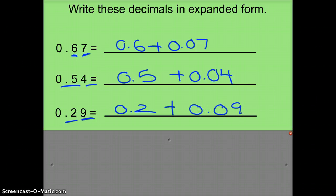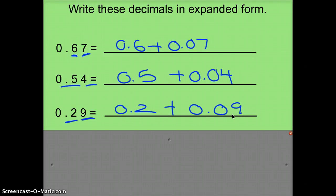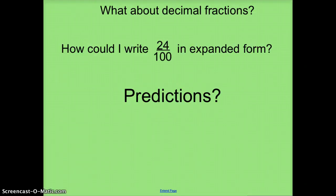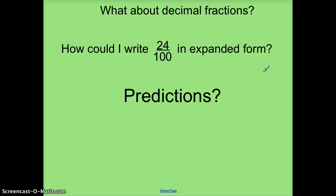The main idea is that we're breaking up these numbers into their separate place values — 10ths and 100ths. Here we're going to take a look at how to do that with a fraction. I have the fraction 24 100ths, and I'm going to break that down into expanded form or expanded notation.